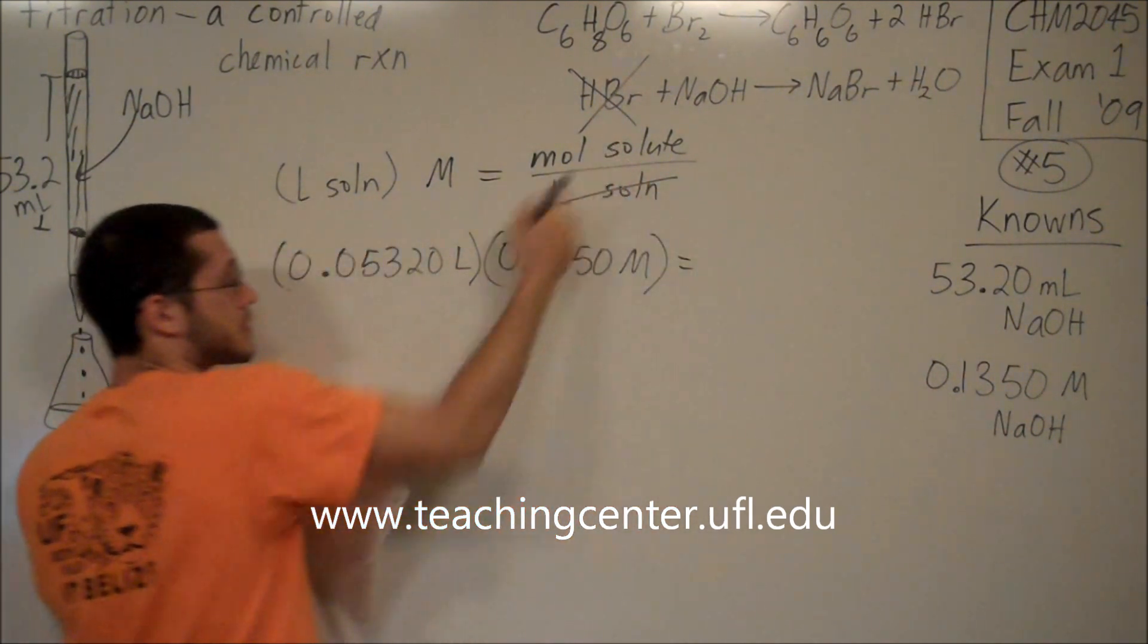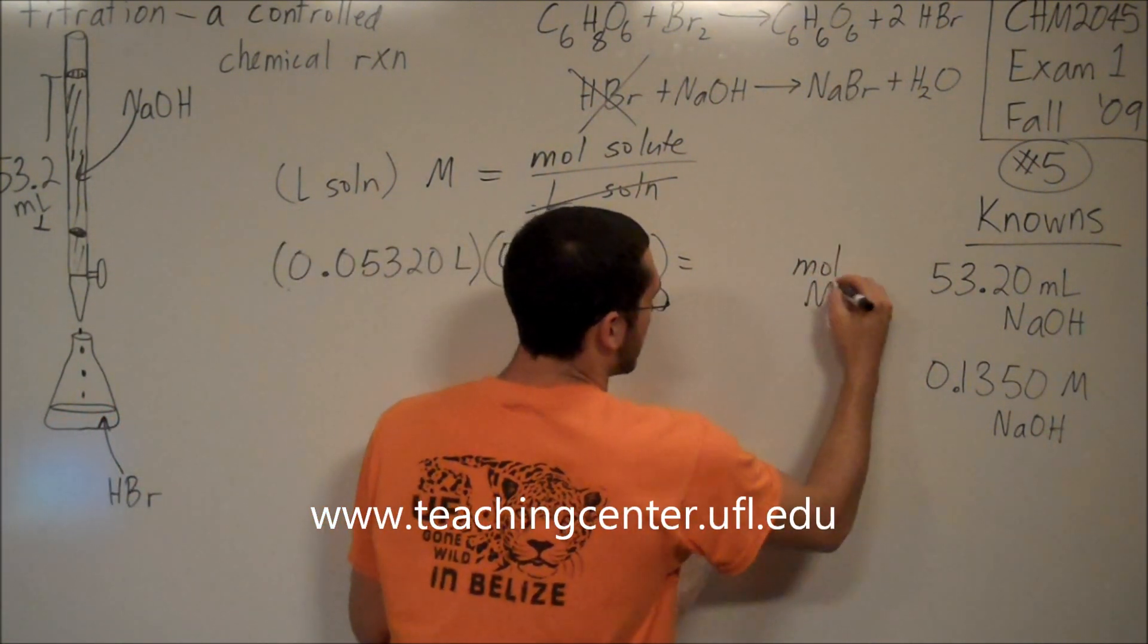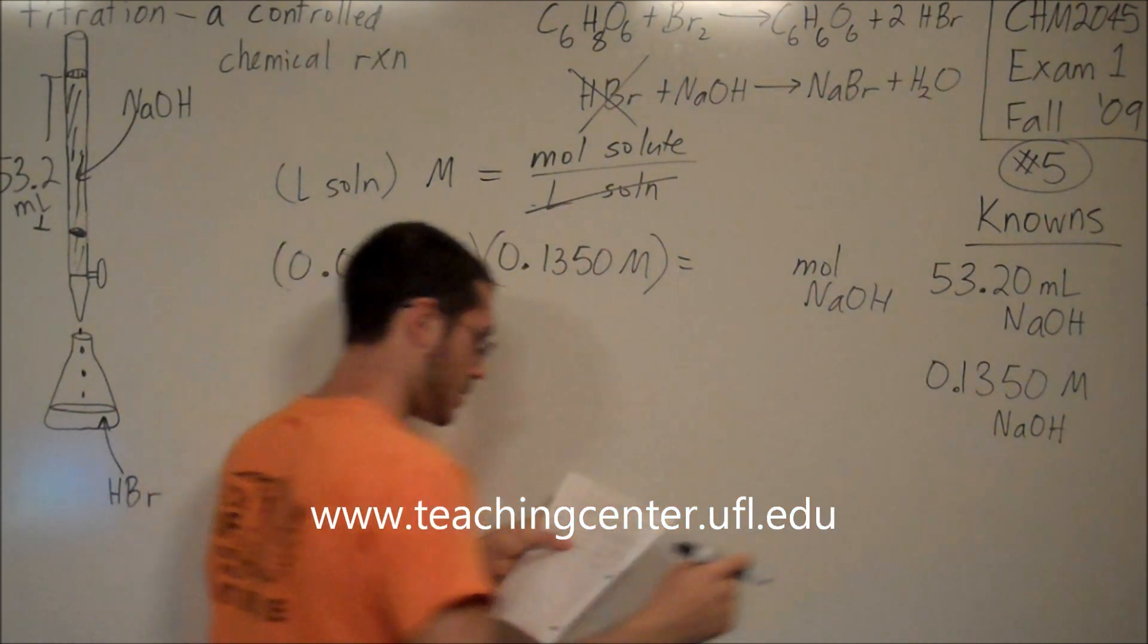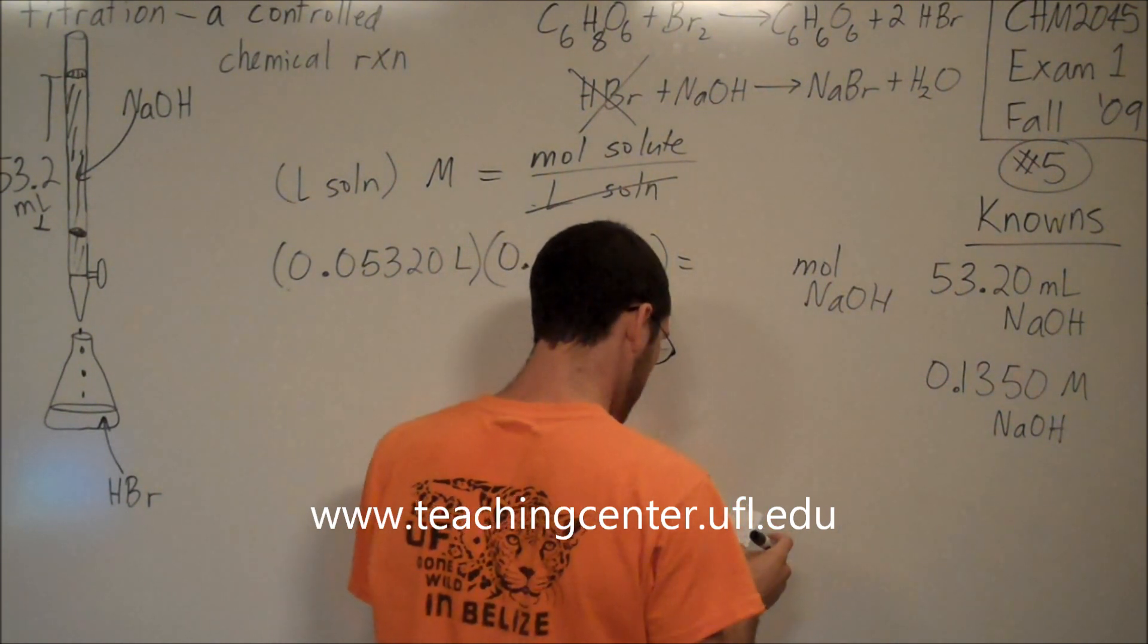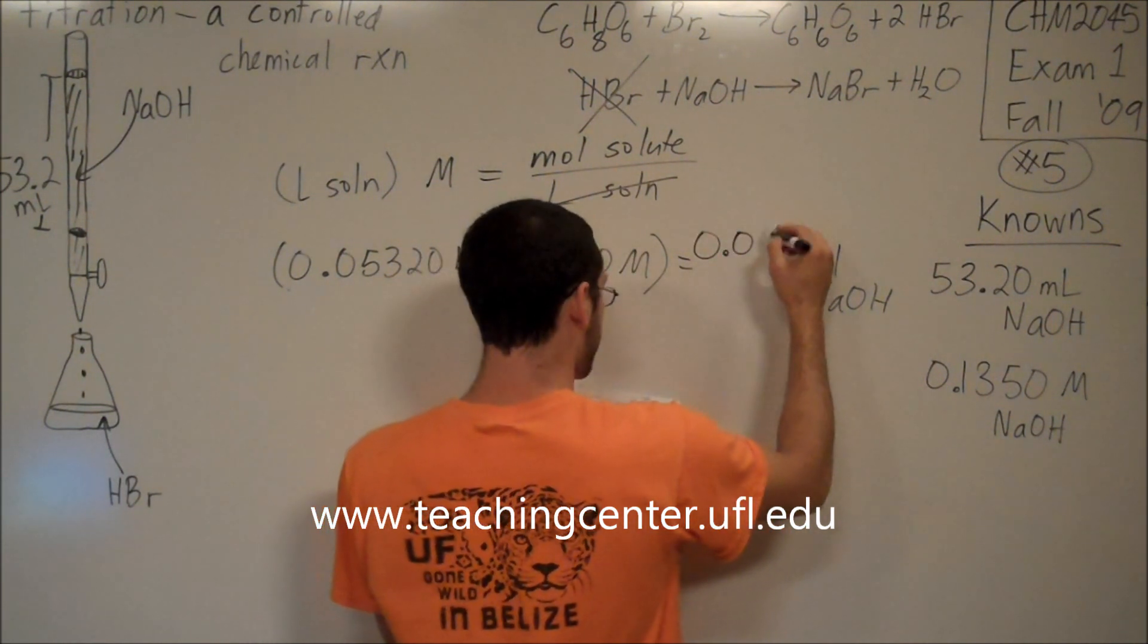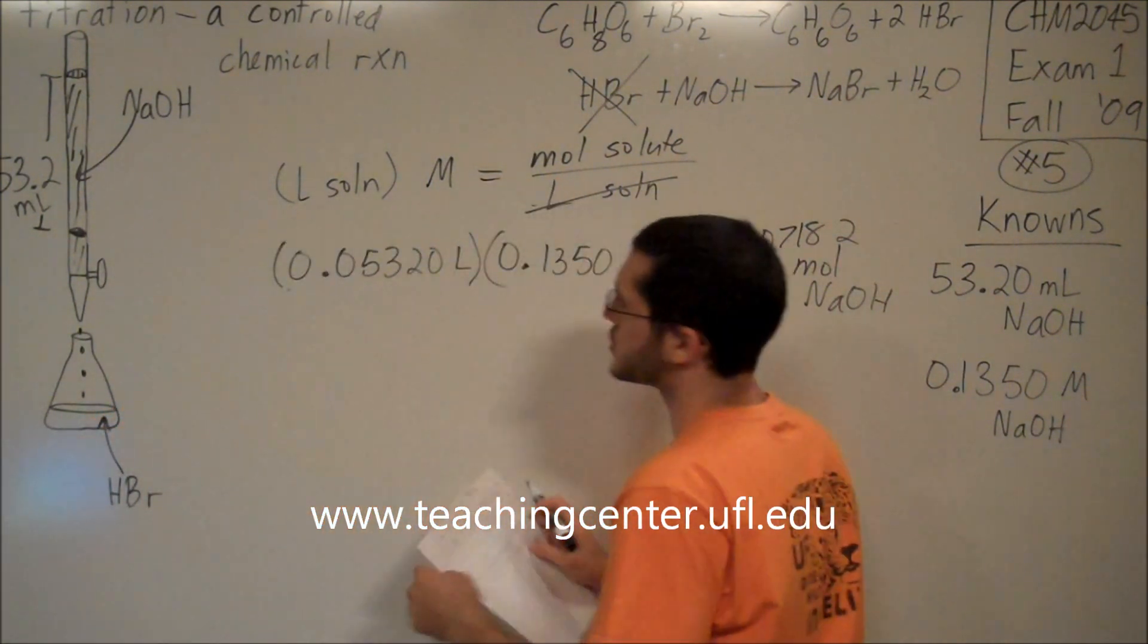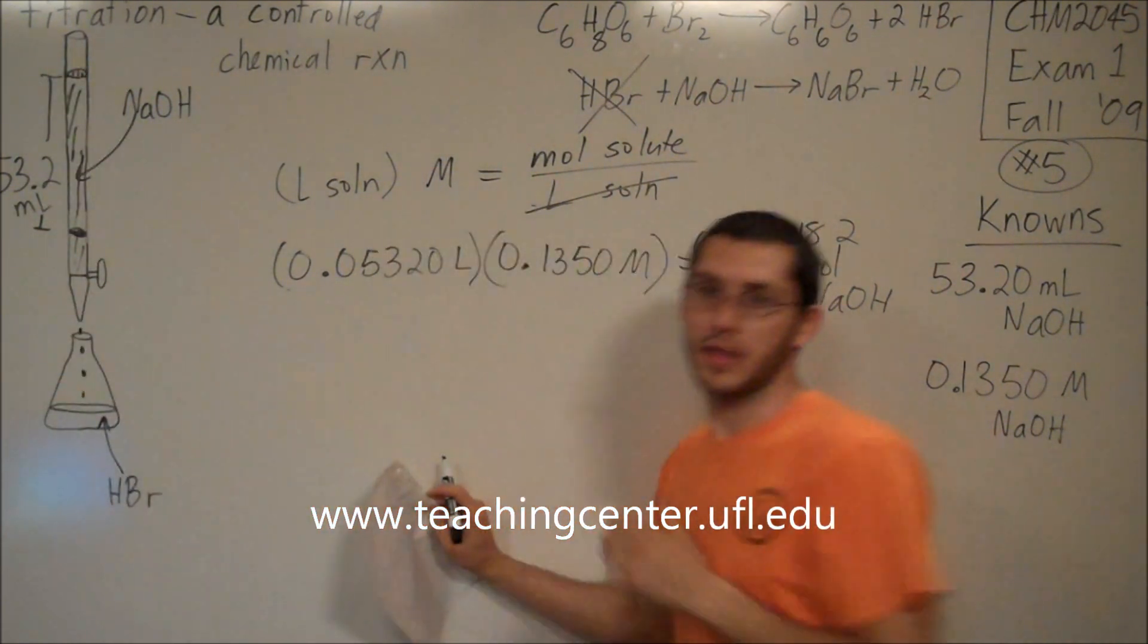And that's going to give me the moles of solute, or the moles of NaOH. This turns out to be 0.007182 moles of NaOH. So what did we just do? We just figured out how many moles we used in order to completely react away the HBr.